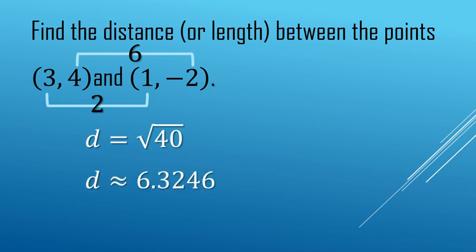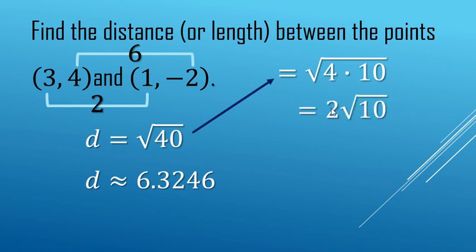You can use a calculator or you can reduce. Square root of 40 is the same thing as square root of 4 times 10. Square root of 4 makes 2. Square root of 10 makes square root of 10. It can't be reduced anymore.